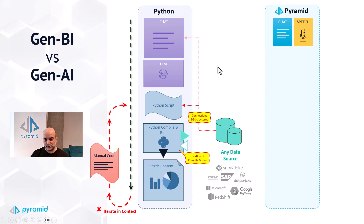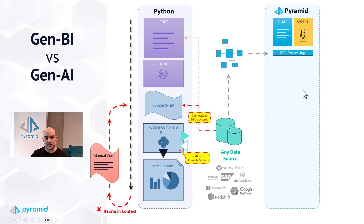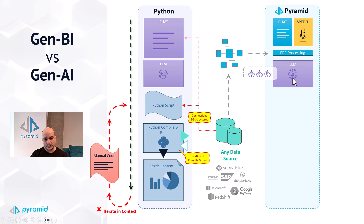In contrast, let's look at the Pyramid process. First, we have two entry points out of the box: one is a typing chat experience, and the other is speech-to-text, which is great for long-winded requests. There's also a pre-processing stage, and that's very important — because in the pre-processing stage, Pyramid automatically retrieves the semantic and relationship structure inherent in the database, plus all the details for how to connect to the databases.